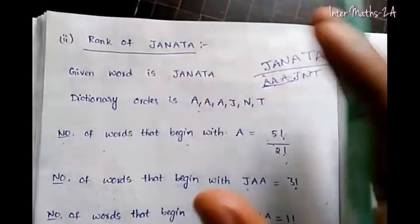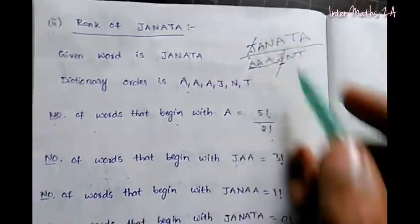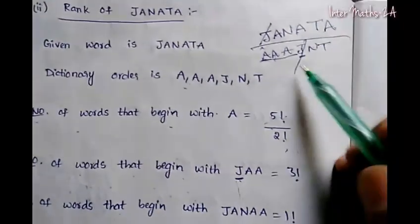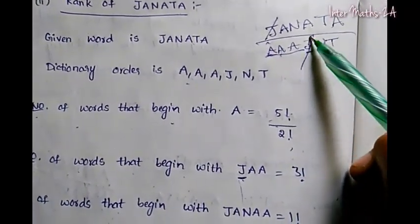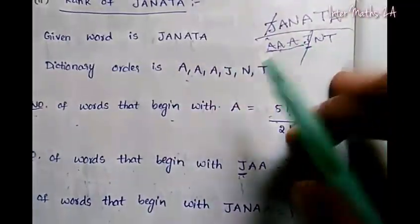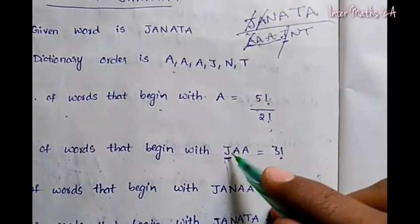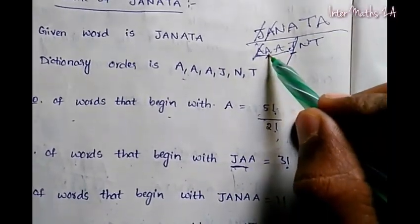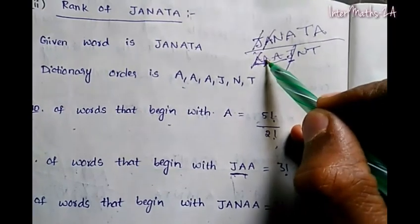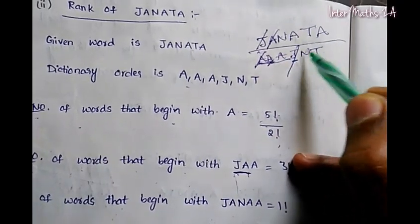The number of words beginning with J: we fix J in the first position. We have 5 remaining letters. Since J is fixed, the next letter to consider is A. There are 3 remaining letters after fixing J and A, giving 3 factorial arrangements.